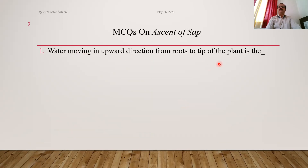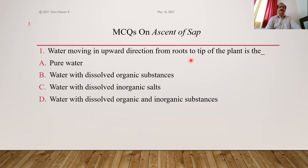Question 1: Water moving upward from roots to the tip of the plant — is it pure water, water with dissolved organic substances, water with dissolved inorganic substances, or water with dissolved organic and inorganic substances? Ascent means upward movement, and sap is the liquid consisting of water with some inorganic mineral salts dissolved in it — not pure water. So it is called soil sap or soil solution, and the answer is option C: water with dissolved inorganic salts.